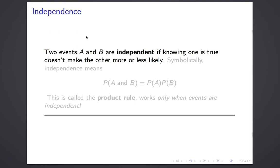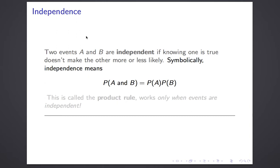In particular, two events A and B are independent if knowing that one is true doesn't make the other more or less likely. That's quite close to the language of independence we used for categorical variables. But the new thing is that symbolically, independence is equivalent to a statement about A and B — it's equivalent to saying that the probability of A and B equals the product of the probability of A times the probability of B. This is called the product rule.